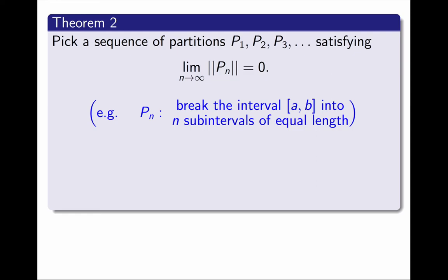This is just an example, probably the simplest. We could also choose other sequences of partitions. This second theorem says that, for any such choice of partitions, we can compute the lower integral of f as the LIMIT as n approaches infinity of the Pₙ lower sum of f. And similarly, the upper integral can be computed as a LIMIT of upper sums.